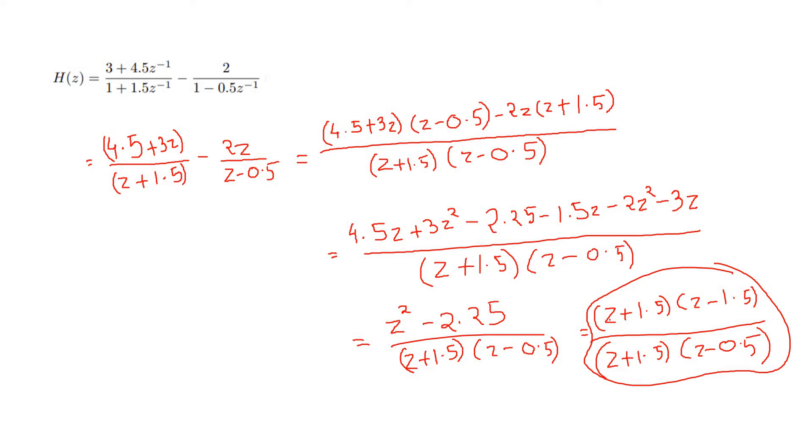So how will our pole-zero plot look like? Very simple. See, at z equals -1.5 and z equals 1.5, two zeros. So one zero at 1.5, one zero at -1.5. And at z equals -1.5, one pole, and at z equals 0.5, one pole.